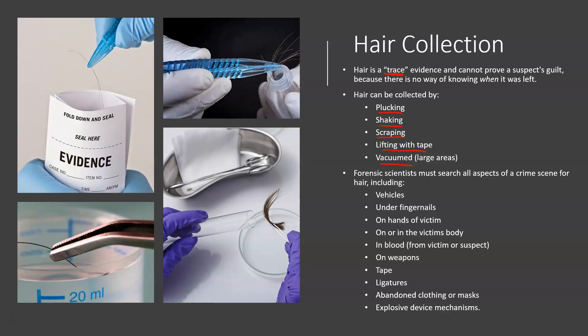Forensic scientists must search all aspects of a crime scene for hair including vehicles and under fingernails. It's really important to note that hairs can be found under the fingernails of a victim or a suspect if there is a physical altercation or struggle, because hairs can so easily be scraped off and a fingernail is often a pretty good tool for scraping. Hair can also be found on or in the victim's body, in blood from a victim or suspect, on weapons, tape, ligatures, abandoned clothes or masks, and explosive device mechanisms. Anything that has been touched can contain hairs, and anywhere that a suspect or victim has gone could potentially be a source of hair.